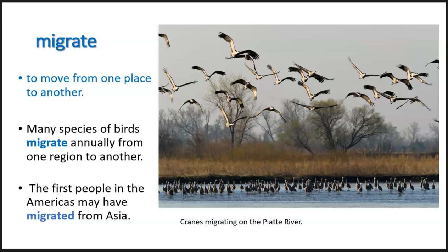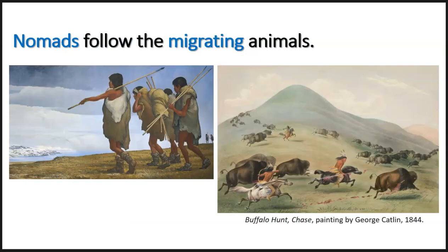In the springtime, they return and migrate back to the north. Migration refers to a large movement of people or animals. The first people who came to the Americas may have migrated from Asia — they also were probably nomads. So nomads follow the migrating animals, and the nomads themselves were migrating all the time.